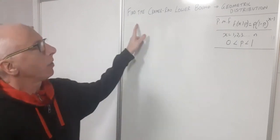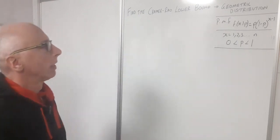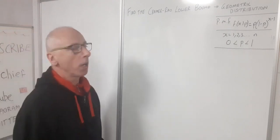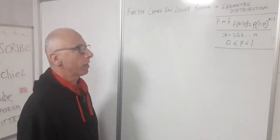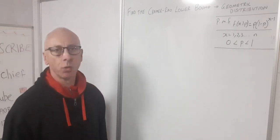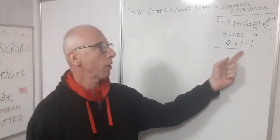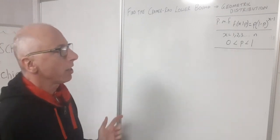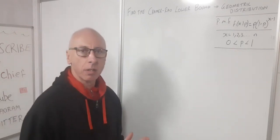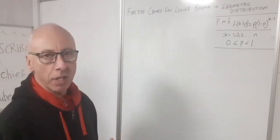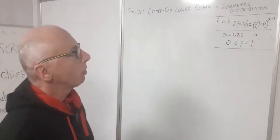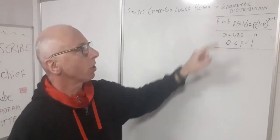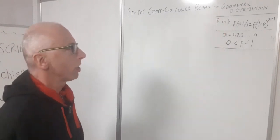What about the Cramér-Rao lower bound? The Cramér-Rao lower bound is all about the variance — it's trying to reduce the variance of the parameter p. The tighter we are to the mean of p, the better we can estimate our geometric distribution.